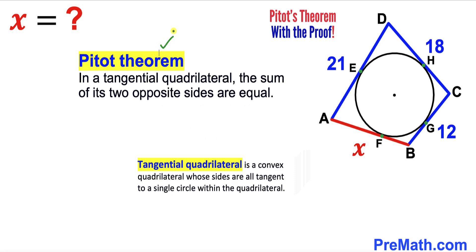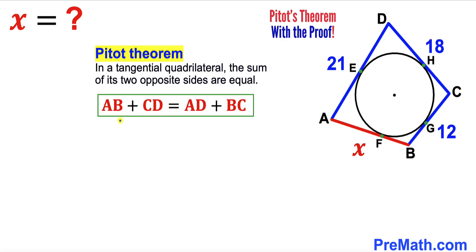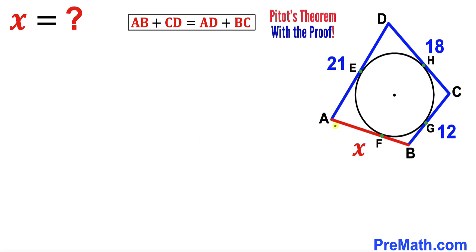Now we are going to go over Pitot's theorem. According to this theorem, in a tangential quadrilateral the sum of its two opposite sides are equal. Mathematically, the formula is: AB plus CD equals AD plus BC.